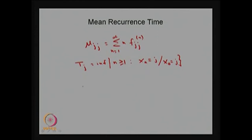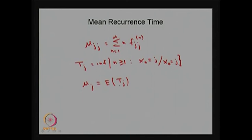Using this random variable, you can also define the mean recurrence time. I can define the mean recurrence time as mu suffix j — only one suffix j is needed. So mu_j is the expectation of the random variable T_j. Therefore, the expected first passage time can be written as mu suffix j. So mu_j and mu_jj are one and the same — here you find the distribution and use it, and here you find the average time using the expectation of T_j.